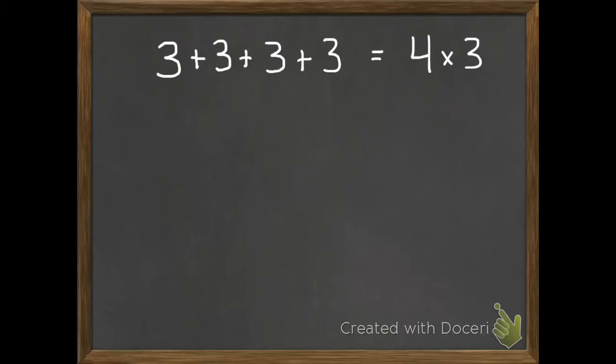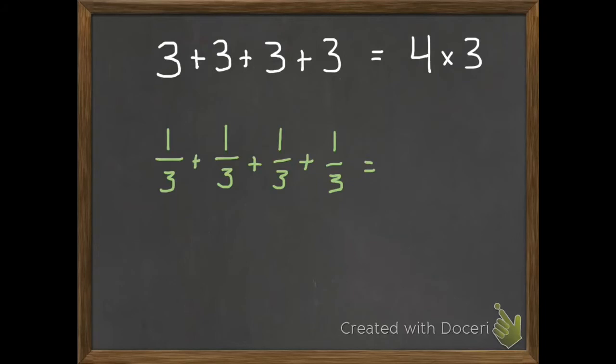We do the same thing for fractions. We have a big list of fractions we're adding: 1 third plus 1 third plus 1 third plus 1 third. We can write that a little simpler as a multiplication equation. So we have four of these 1 thirds, so we can write that as 4 times 1 third.